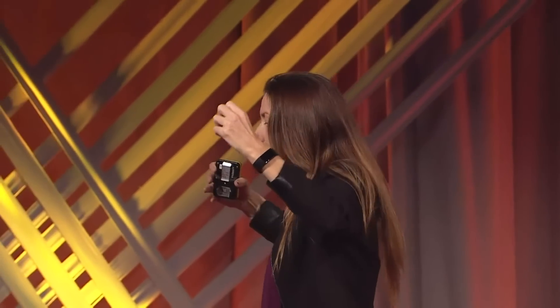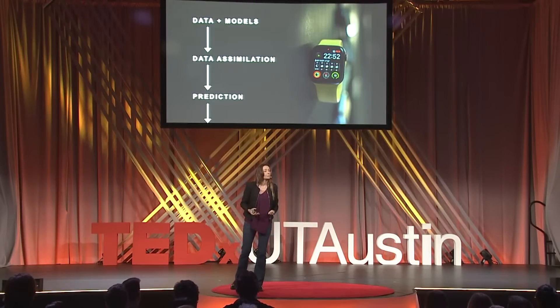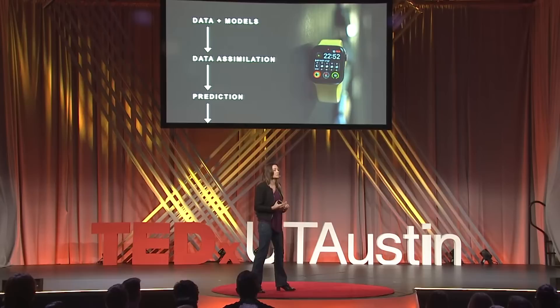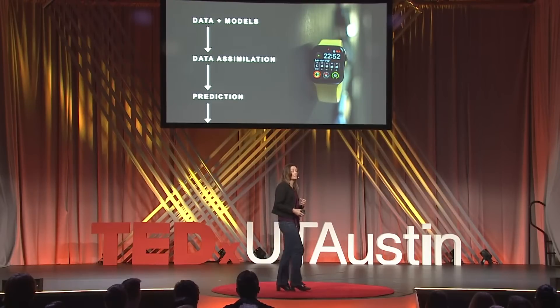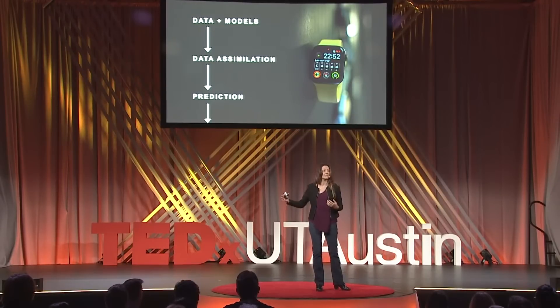Mathematically, this is known as data assimilation. We have data and we have models. With data assimilation, we start updating the models as new data are collected from the system — and we don't do this update just once, but we do it continually. So as the system changes, as I get older and my circadian rhythm or cardiac function is not what it once was, new data are collected and the models evolve and follow along with me. Data assimilation is really important because it's what personalizes the models to me. And that gets us to the fourth element: prediction. Now that I have these personalized models, I can get predictions or recommendations tailored to me as an individual and to my dynamically evolving state over my life.